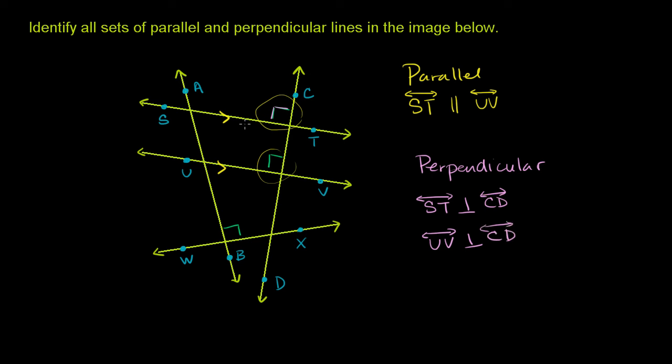So I did UV, ST, they're perpendicular to CD. And then after that, the only other information where they definitely tell us that two lines are intersecting at right angles are line AB and WX. So AB is definitely perpendicular to WX, line WX. And I think we are done.